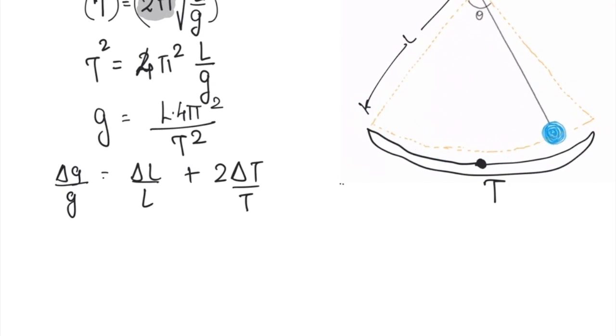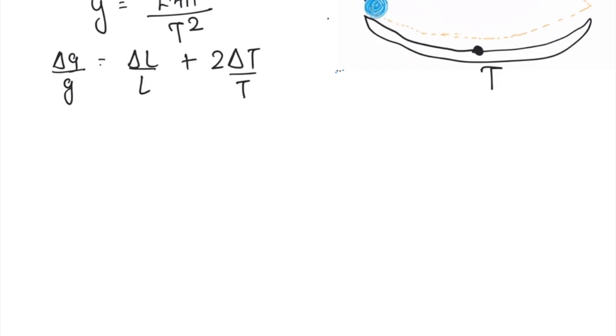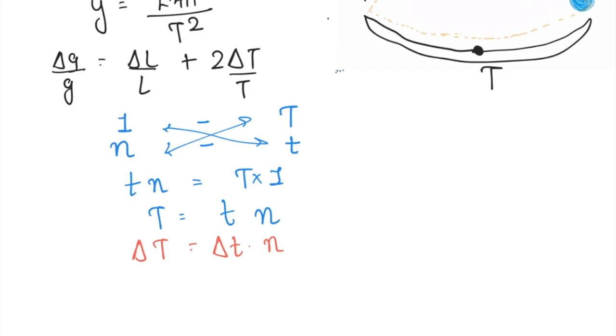So what will you do? We will find out the relation between small t and capital T. If time taken to complete one oscillation is capital T, then what will be time for n oscillations? If it is small t, then by cross multiplication, we can say that T times n equals capital T times one. That is, capital T equals t times n.